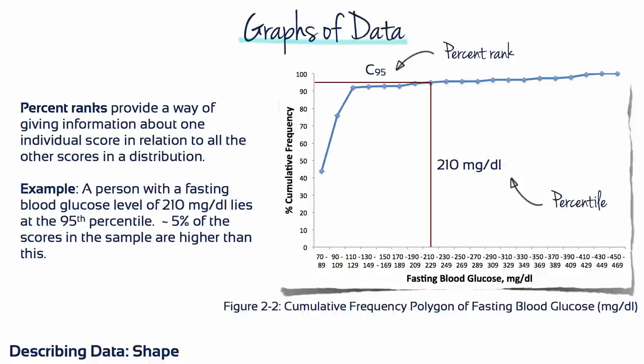For example, say a person from the student-run clinic with a fasting blood glucose level of 210 mg per deciliter lies at the 95th percentile. Roughly 5% of the scores in the sample are higher than this.